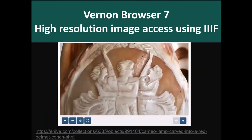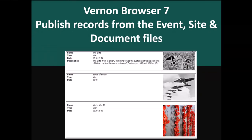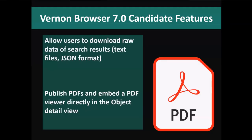We've implemented support for high-resolution images in eHive and are working through porting that functionality to Vernon Browser for sites that want to selectively give access to high-resolution images — for example, only images where no copyright applies. We're also meeting the demand for access to other files within Vernon CMS in the online interface, covering access to event records, site records, and document records. We also have more sites wanting to publish linked PDF files to the web, where they've scanned complex items such as books or articles and want those scanned versions available to read page by page online. We can currently publish PDFs but it's a long-winded process, so we're looking at automating that.